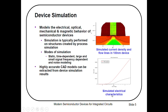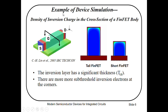Here we have simulated electrical characteristics — this is an example of device simulations. We have this 3D FinFET structure, and we are interested to see the density of inversion charge in the cross section of a FinFET body. Here we have a tall FinFET, a short FinFET, and this is the cross section of a FinFET body with source, gate, and drain. Using device simulations we can find the density of inversion charge in the cross section.